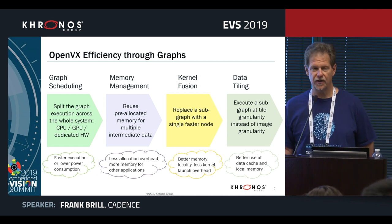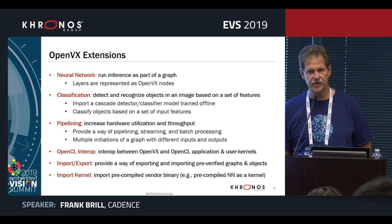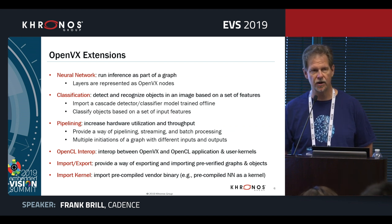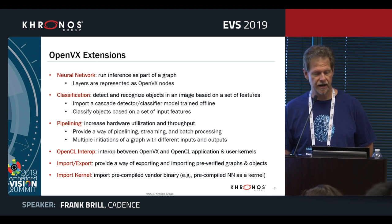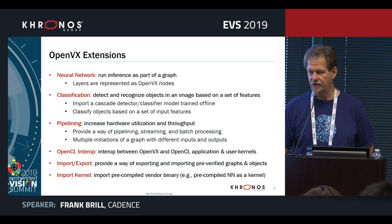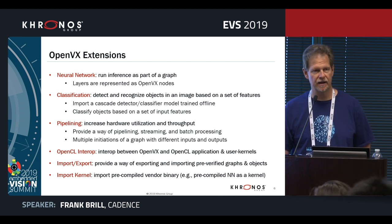There are extensions worth pointing out. There is a neural network extension — most OpenVX functions are image processing and traditional computer vision, but this extension provides common neural network layers that can be embedded in your graph. There is also a classification extension for more traditional approaches using feature detectors and cascade classifiers, useful when you have very limited compute power and a limited number of things to recognize.